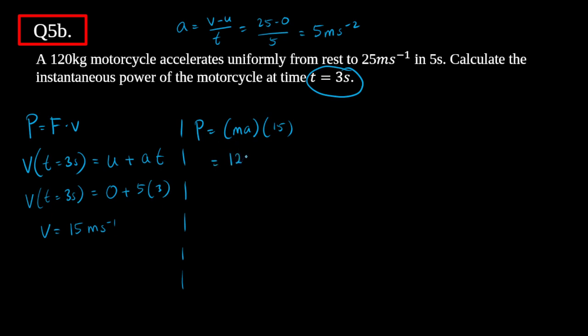Force is calculated using F = ma. So P = ma × v = 120 kg × 5 m/s² × 15 m/s = 9000 watts, or 9 kilowatts. That is the instantaneous power of the motorcycle at t = 3 seconds.